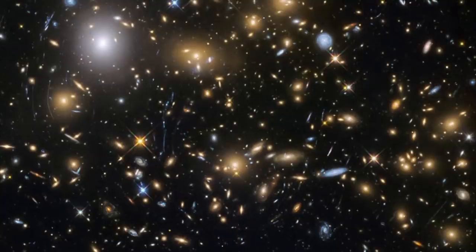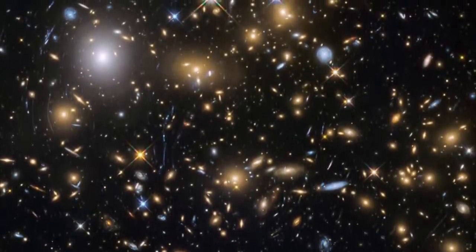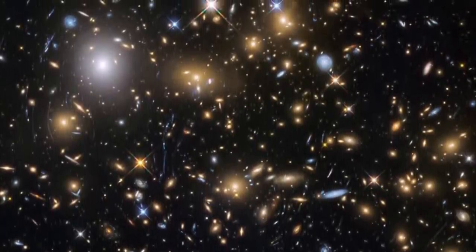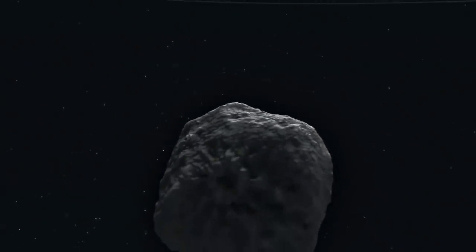When discussing the Fermi Paradox, one of the major themes within it is the idea of a great filter, or something that prevents life from becoming a spacefaring civilization spanning the galaxy, some kind of stumbling block that no one makes it past.